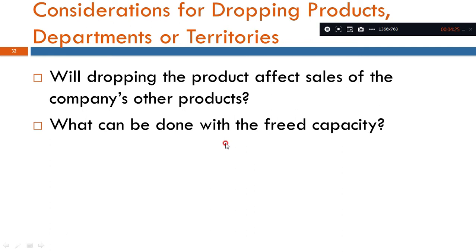Finally, what can be done with the freed capacity? If we drop the product, the freed capacity is also a qualitative factor. Even if we free up capacity, that capacity can be repurposed. Now, we have an example of these decision steps.